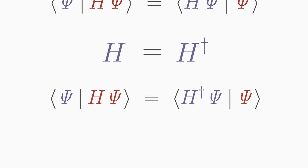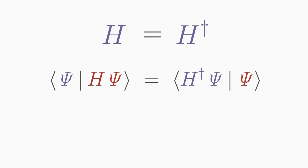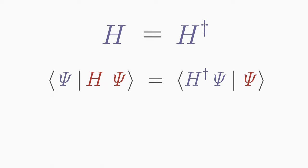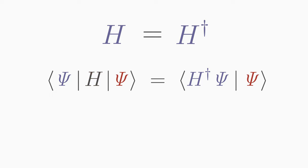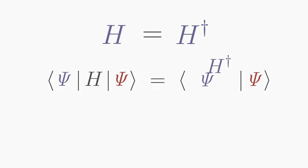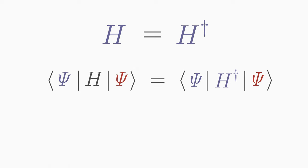Since it doesn't matter whether the Hermitian operator is applied to the bra or to the ket-vector first, H can be placed between the bra and the ket. The operator then acts on either the left or right successor. Similarly, the adjoint operator can be written between the bra and ket-vectors.